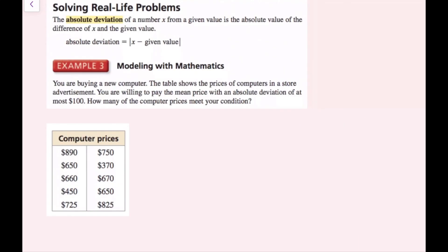The absolute deviation of a number x from a given value is the absolute value of the difference of x and the given value. In our equation, the absolute deviation equals the absolute value of x minus the given value.